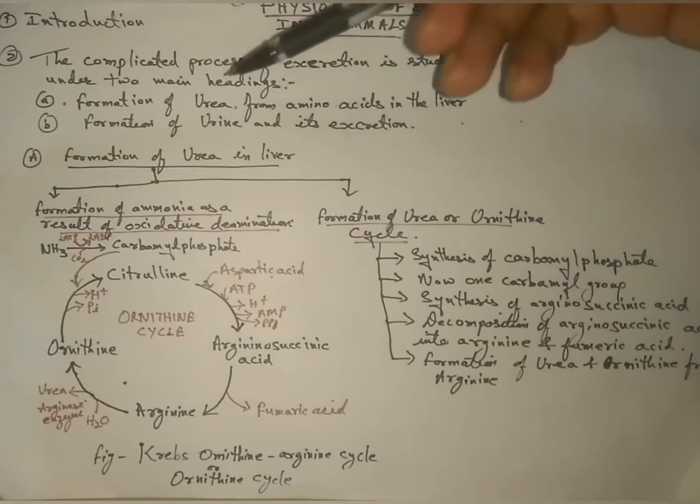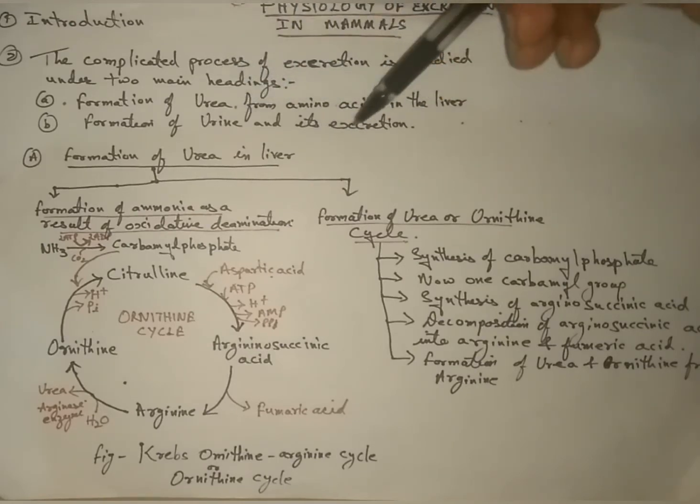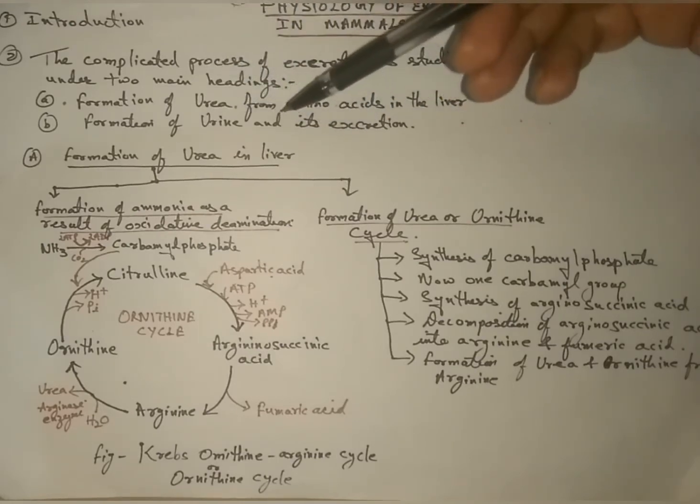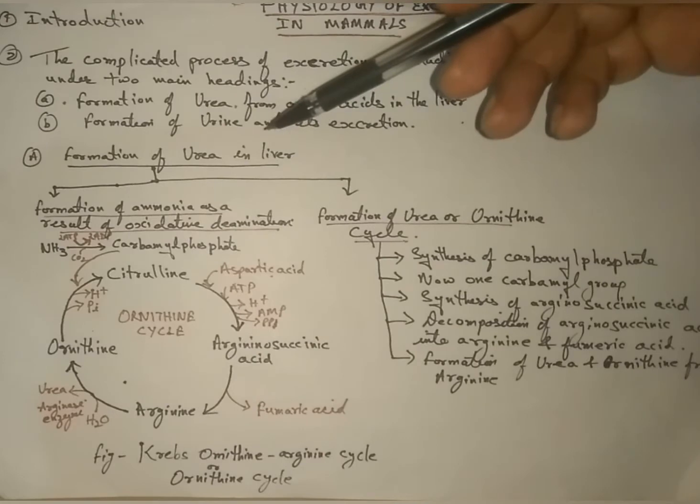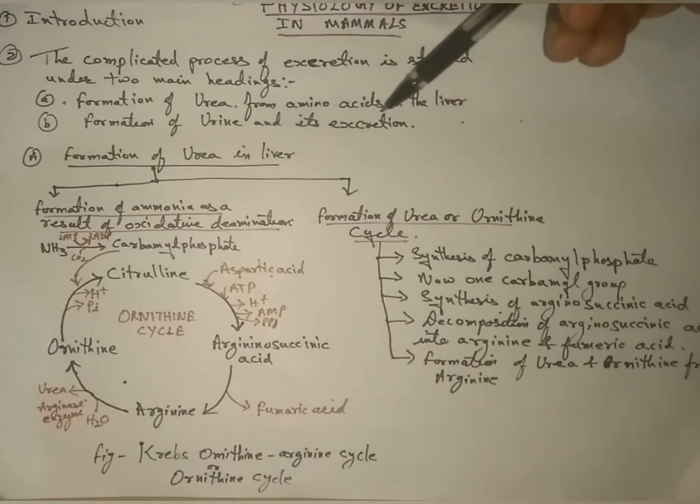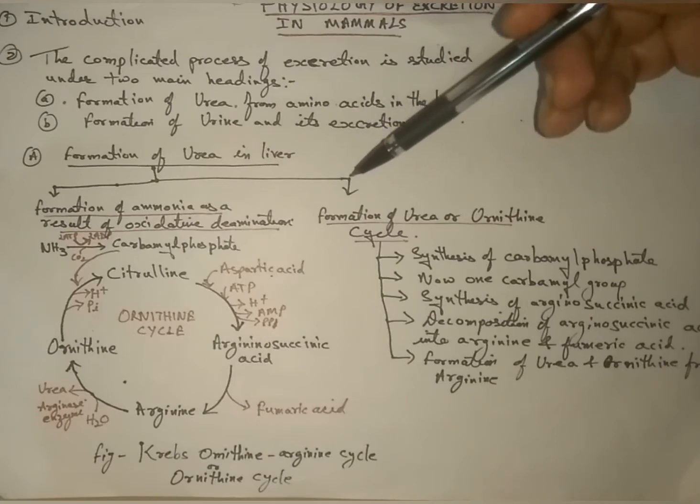The complicated process of excretion is studied under these two main headings. First, formation of urea from amino acids in the liver, and second, formation of urine and its excretion.